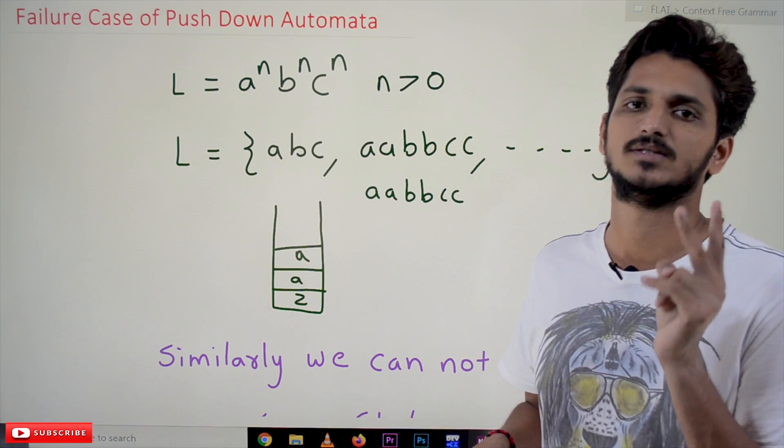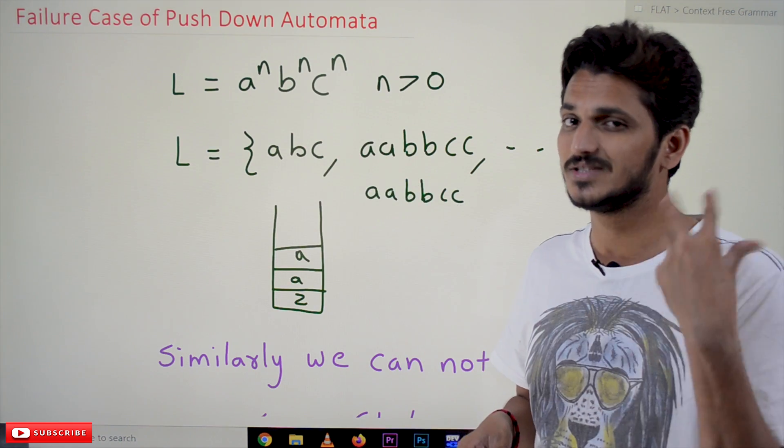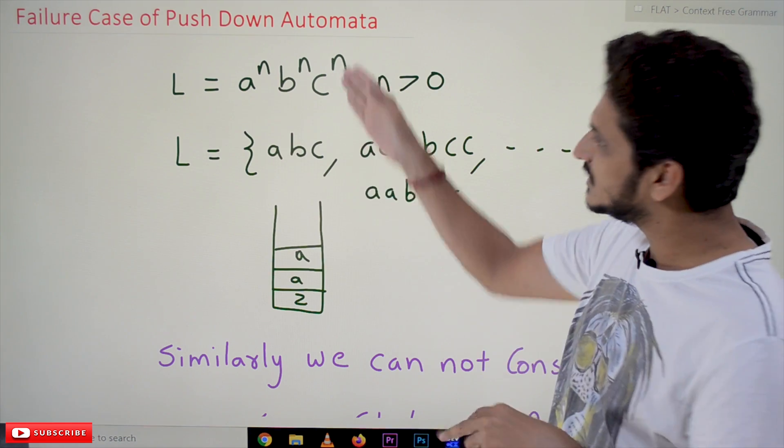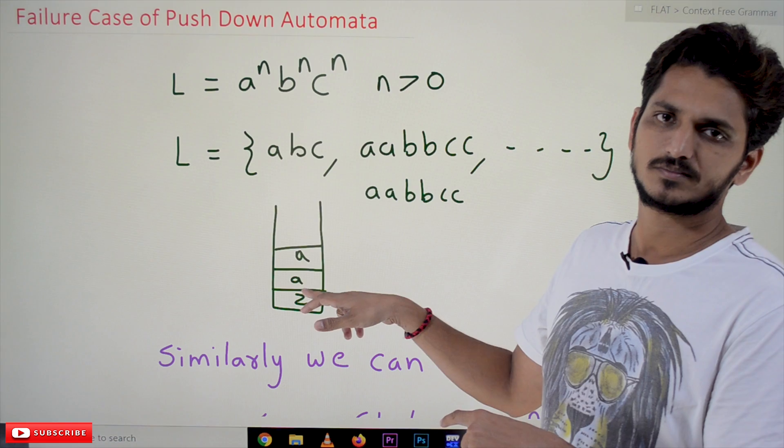We can do counting only for equality. We can check the equality for only two symbols. We cannot do it for three symbols. For understanding purposes, we are saying it like two symbols and three symbols. You got the essence of this, right?